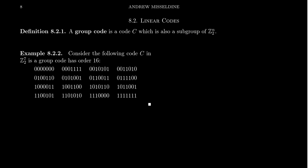Let me give you an example of one. Consider the following code C, which lives inside of Z2^7. You'll notice it does have the identity element that's required to be a subgroup. We have these other 15 elements. I'll leave it up to you to verify that this, in fact, does form a subgroup of order 16 inside of Z2^7.